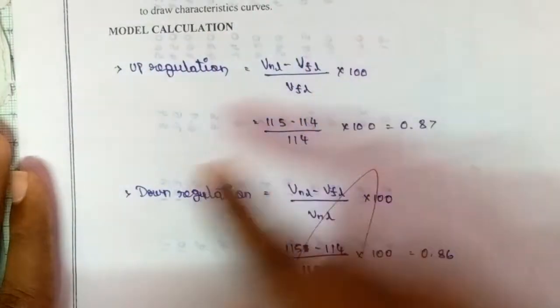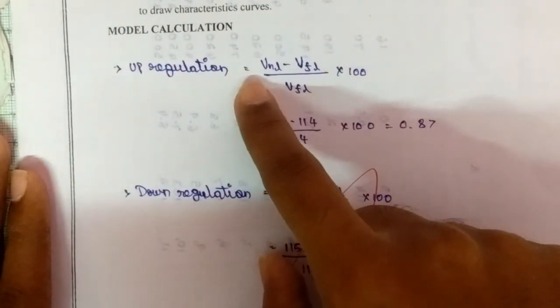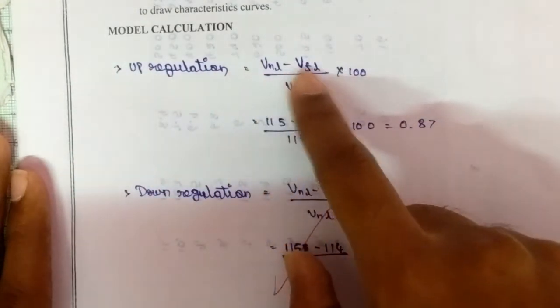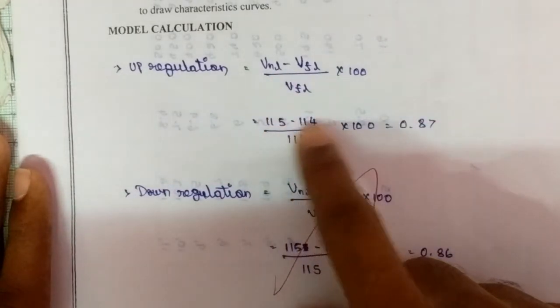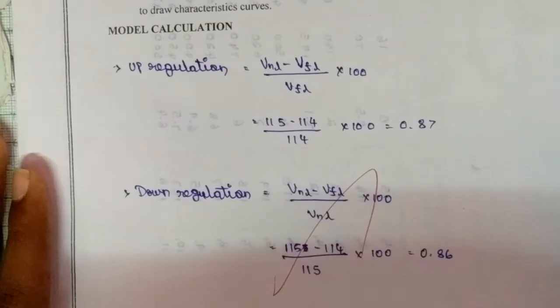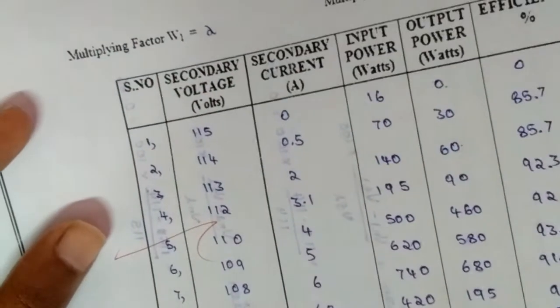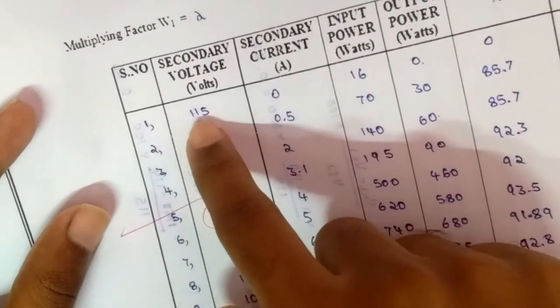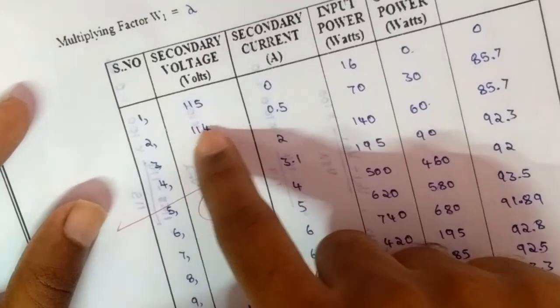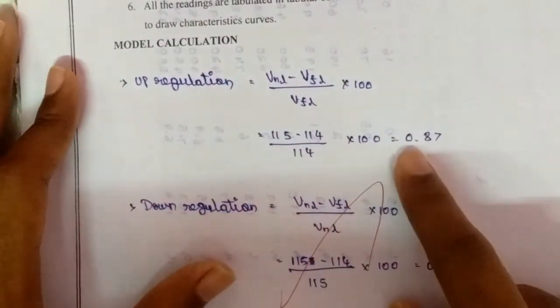I will show the model calculation for up regulation. Up regulation will be VNL minus VFL by VFL into 100. So VNL is equal to 115 minus 114 by 114 into 100. I have taken this value, so the no-load VNL will be 115 and VFL will be 114. So the value will be 0.87.